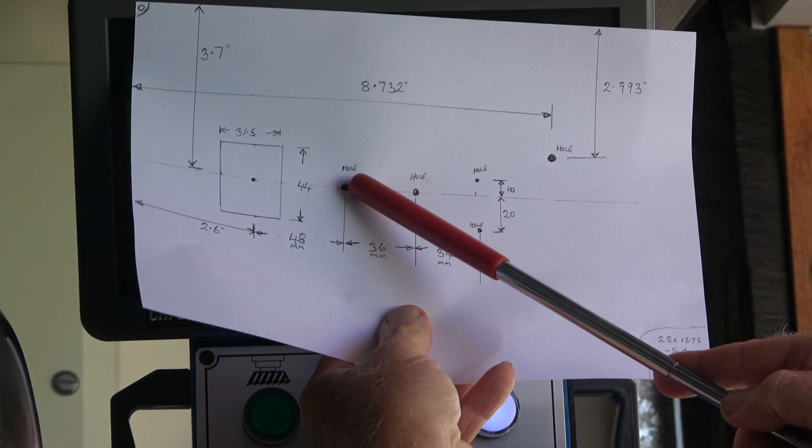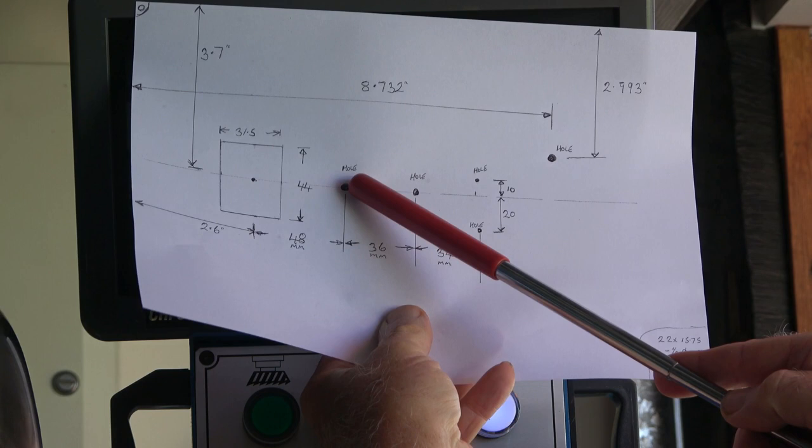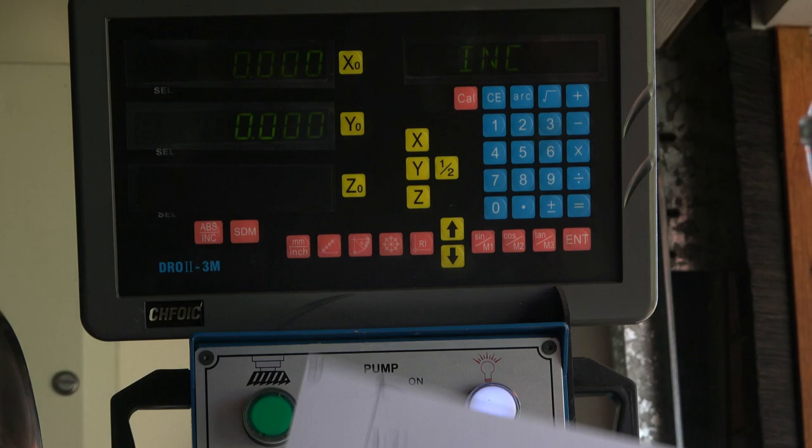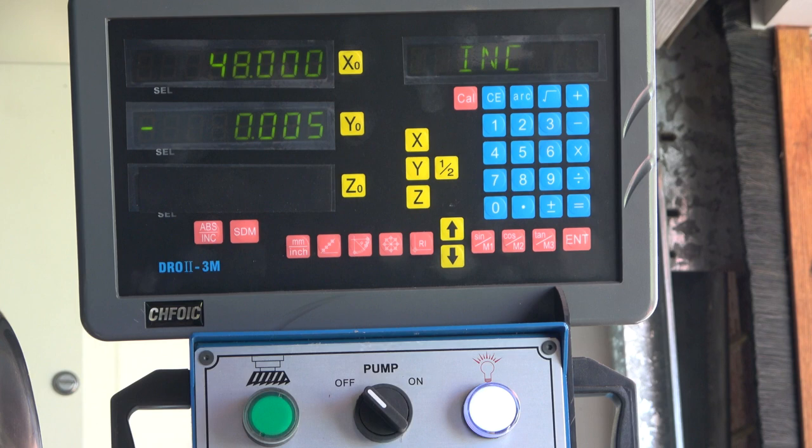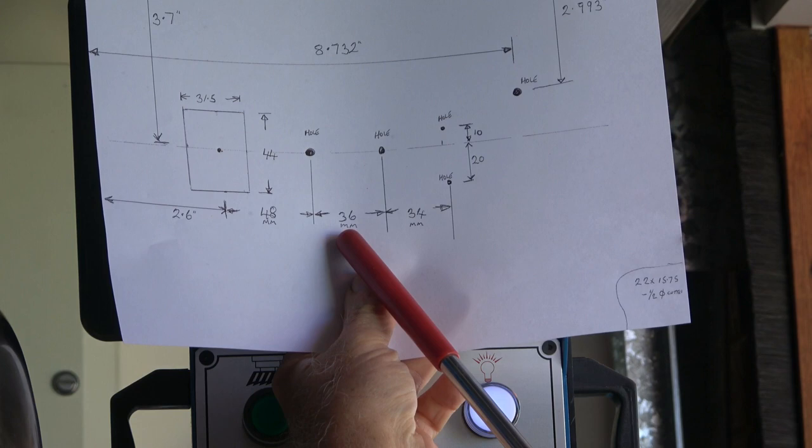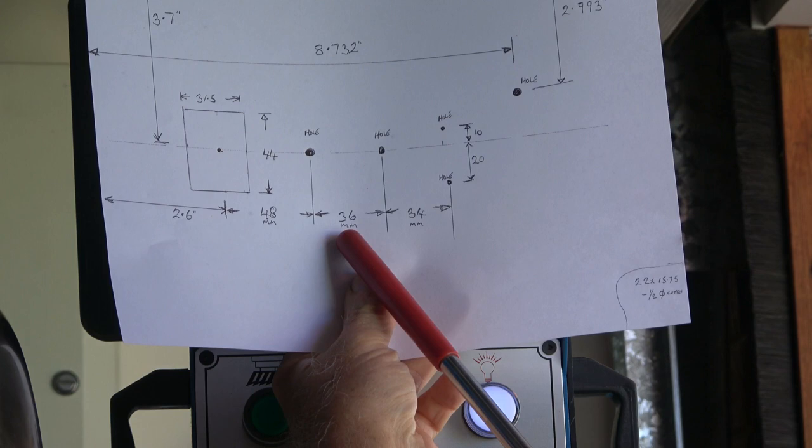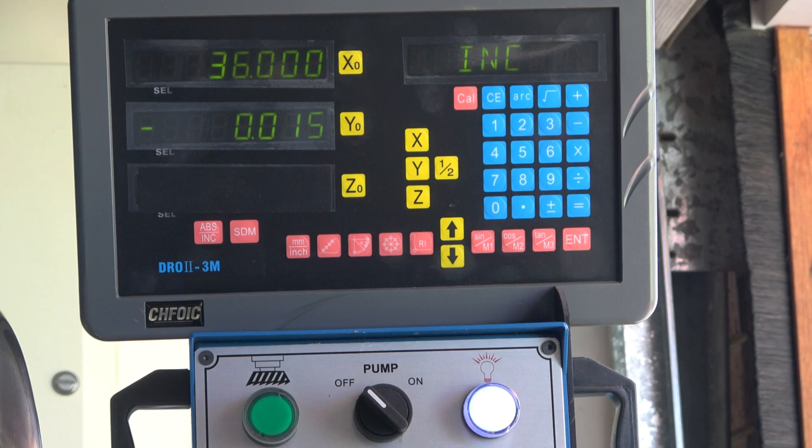So, what we need to do is to drill this hole. So, what we can actually then do from there is just wind the X over to this dimension here, 48mm. So, we just crank that along. 48mm. So, there we are, we're now at that point, you can drill that hole. Zero X again. And then wind over to the next one, 36. And drill that hole. Zero it out again.